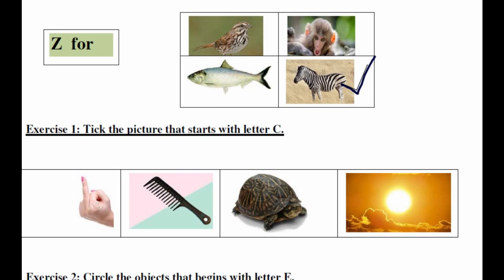Exercise 1 with pictures. Tick the picture that starts with letter C. Now here four pictures are given. We need to tick which picture starts with C. Let's see, there are four pictures. C for corn. So we will tick on corn. Next, let's see exercise number 2.